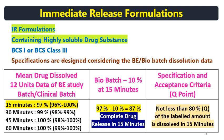If complete release occurs within 15 minutes for the biobatch, then considering the S2 criteria, you can select a Q point of 80%. This type of formulation will pass at S1 stage as well. And if any decrease in dissolution is observed at S1, then it will certainly pass at S2 stage. Whenever deriving specifications, consider the S2 stage for dissolution specification.